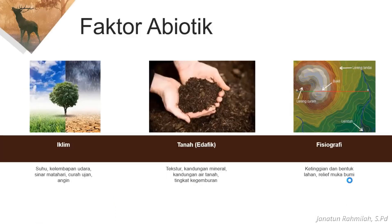Faktor abiotik ada tiga. Yang pertama tentang iklim. Iklim itu menyangkut suhu, kelembaban udara, sinar matahari — lamanya sinar matahari yang masuk ke permukaan bumi — serta curah hujan dan angin.